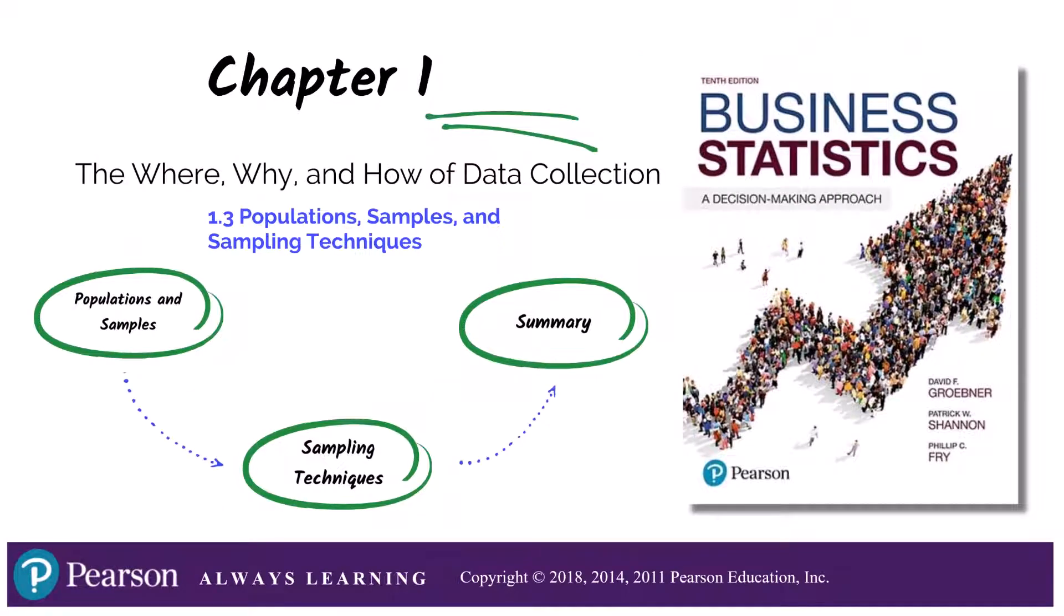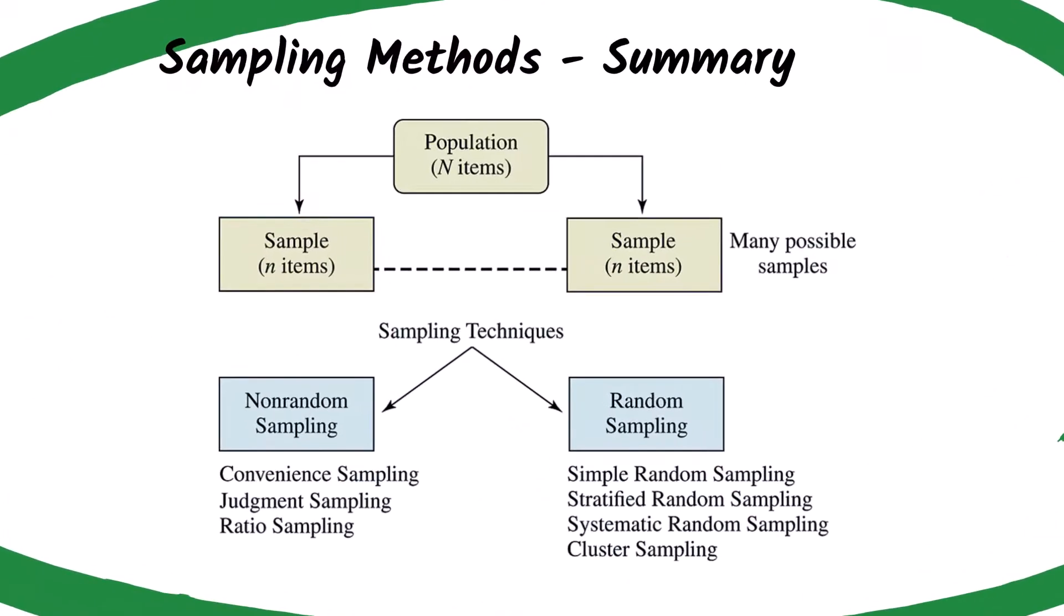Let's finish with a summary of the different sampling methods. Non-random sampling, which means non-chance processes, which we don't really cover much in this class. Random sampling techniques, which mean every item or participant has the same chance of being selected. In this video, we reviewed simple random, stratified random, systematic, and cluster sampling techniques. We'll be utilizing statistical sampling methods throughout this course.